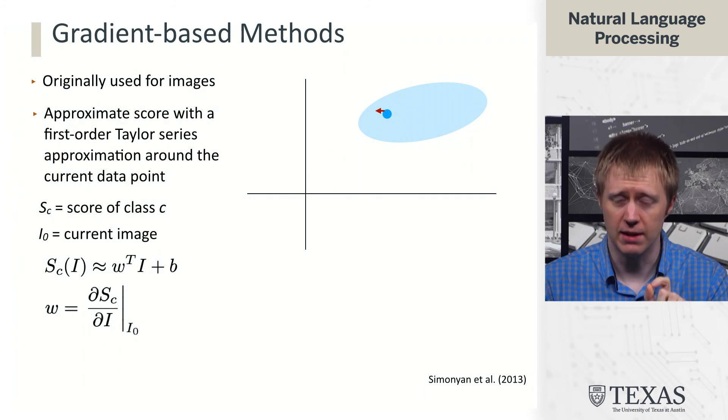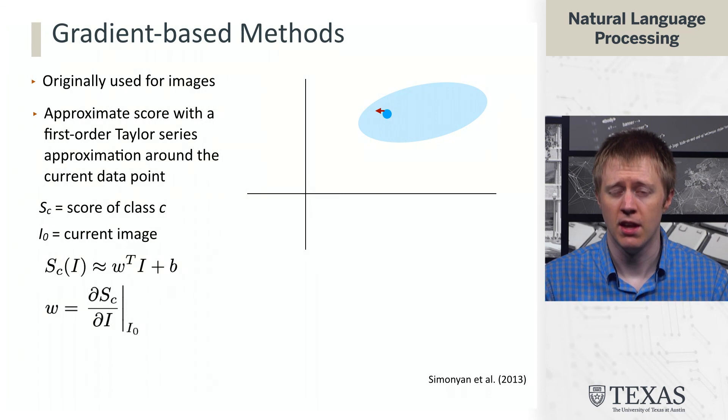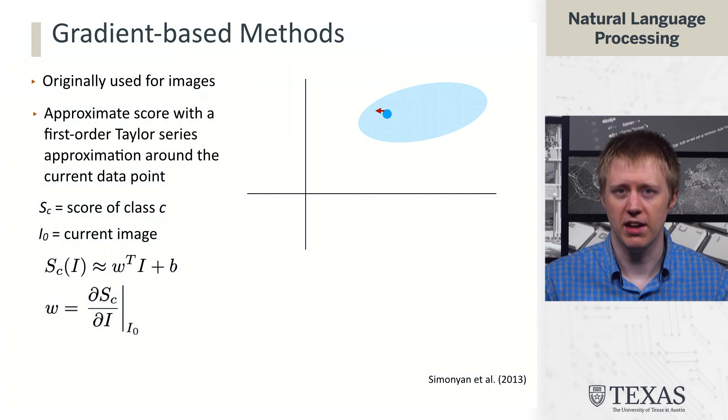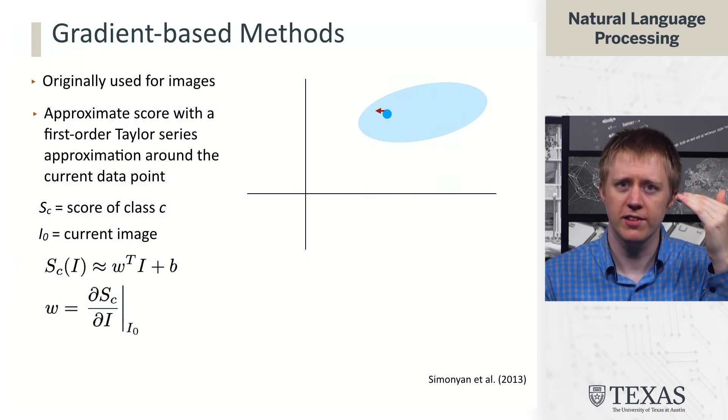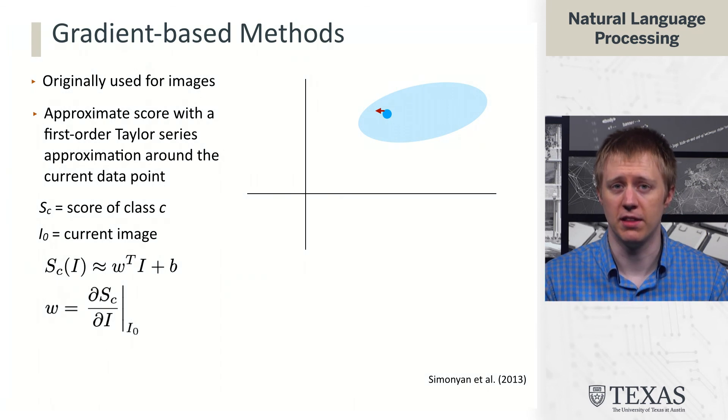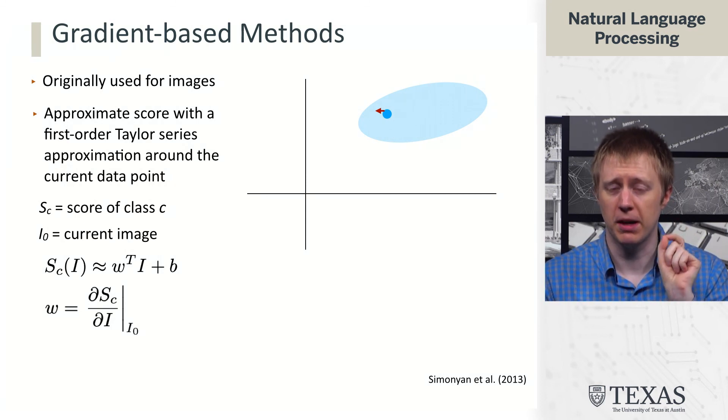So what we do is we take the derivative of the model's score with respect to the input image, or the input text if you're doing natural language processing. This is different than when we normally think about gradients. Normally we think about taking the derivative of a loss with respect to the parameters, and then updating the parameters. So we're kind of flipping it around where now the parameters are constant, but we're taking the derivative with respect to the image.